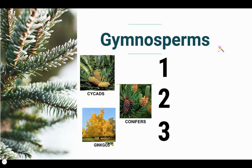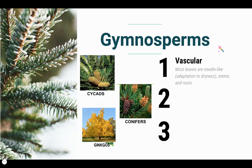Next we have the gymnosperms. This plant group is even less dependent on water. They are vascular plants with leaves — most gymnosperms have needle-like leaves, as seen in this picture. This is an adaptation to dryness, allowing them to retain moisture inside the plant. They also have stems and roots.